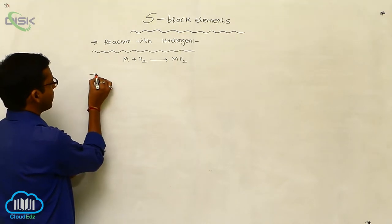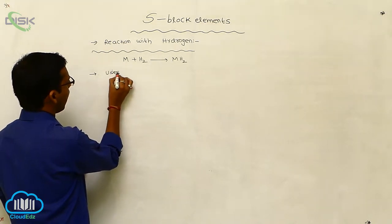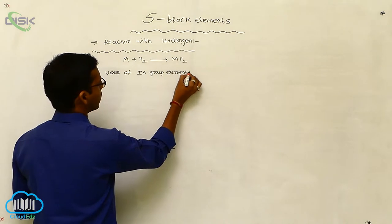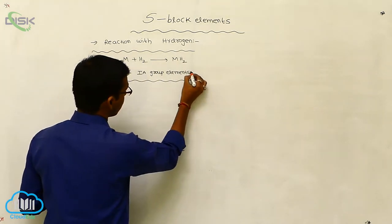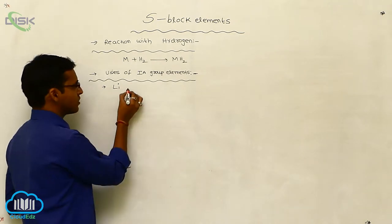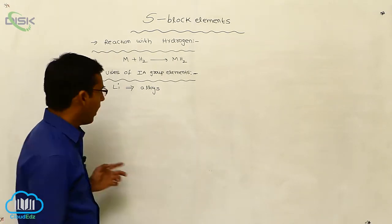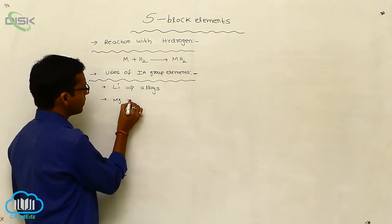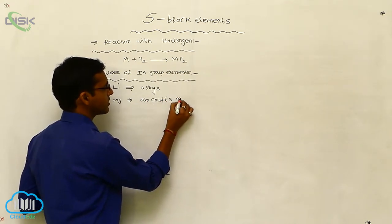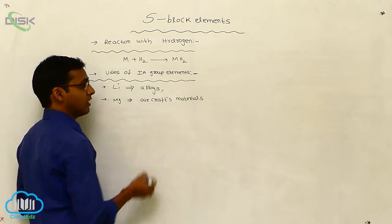Uses of Group 1 elements: lithium metal is used in the preparation of alloys — solid materials made by combining metals. Magnesium metal is used in the preparation of aircraft materials.